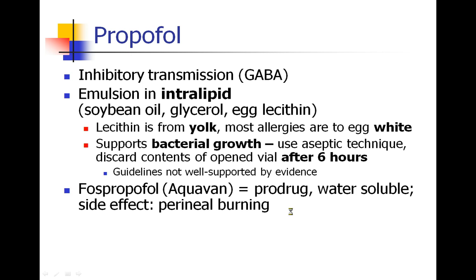There is a substance on the market called phosphopropofol, or Aquavan — actually a prodrug, a precursor to propofol that is metabolized into the active drug after entering the body. Aquavan was primarily designed for sedation, but has been used as an induction agent, especially during propofol shortages. Its most notable side effect is perineal burning.